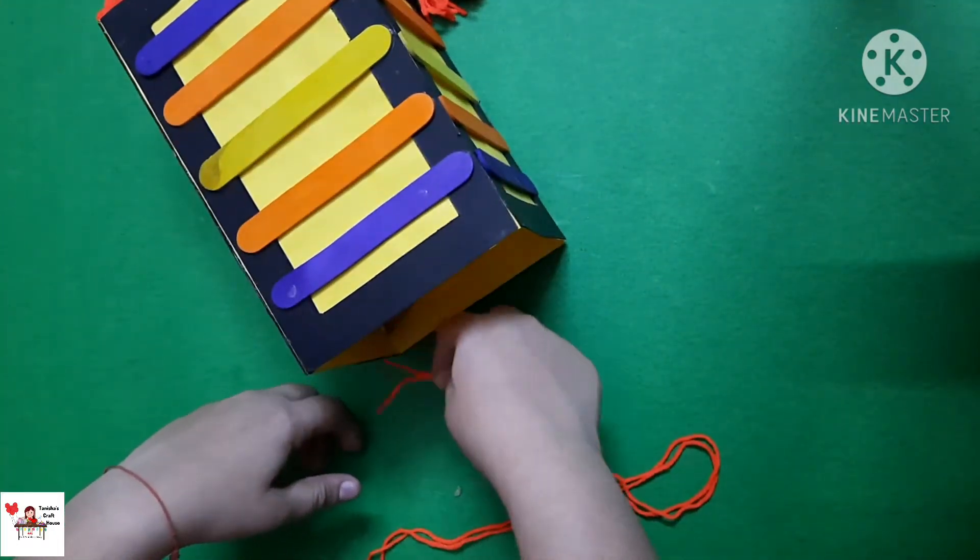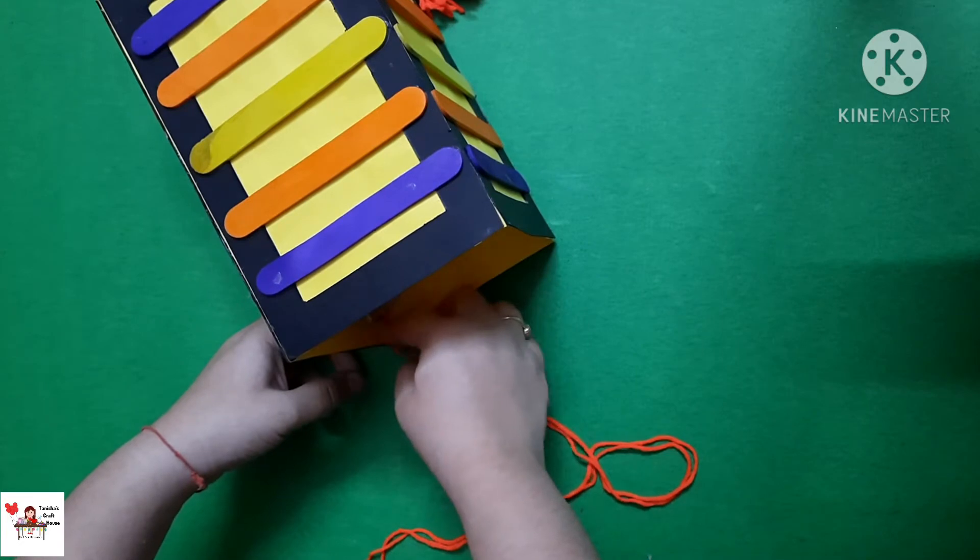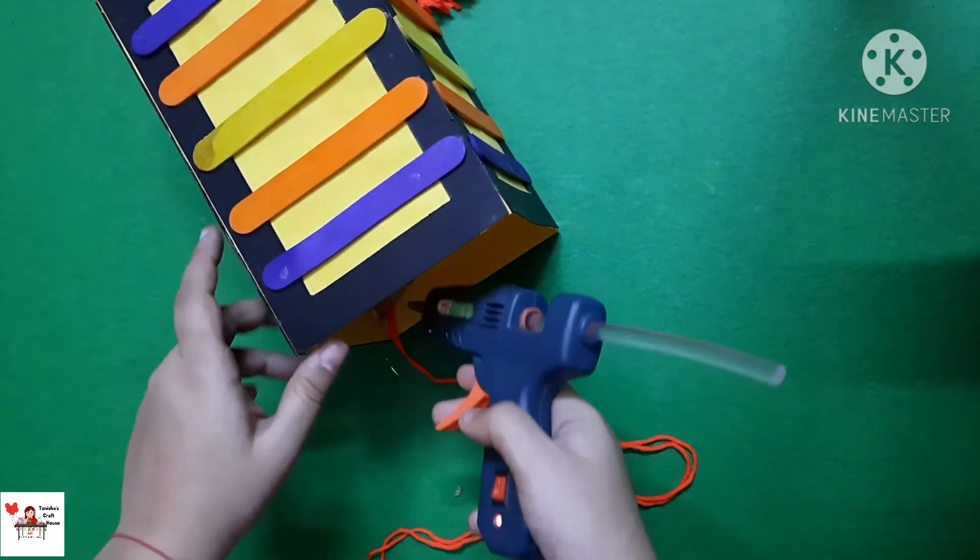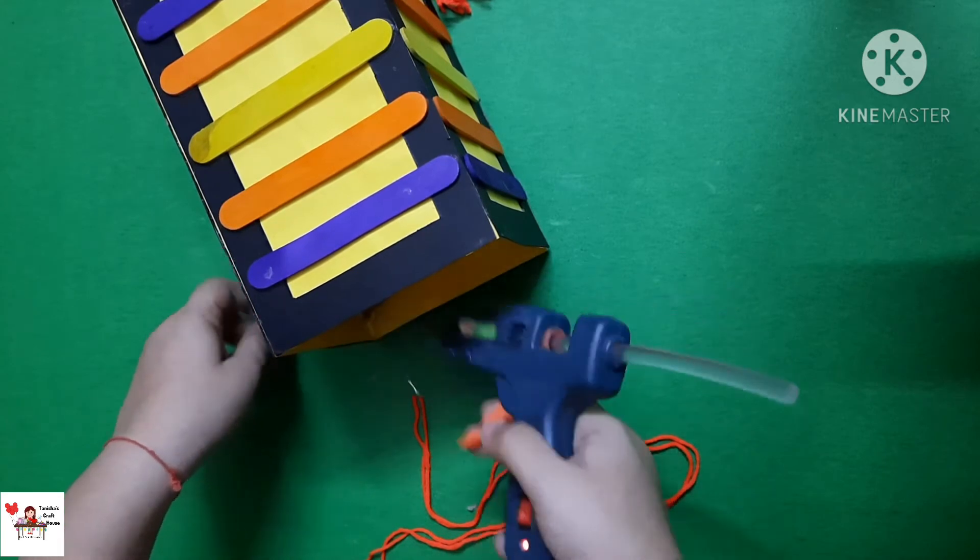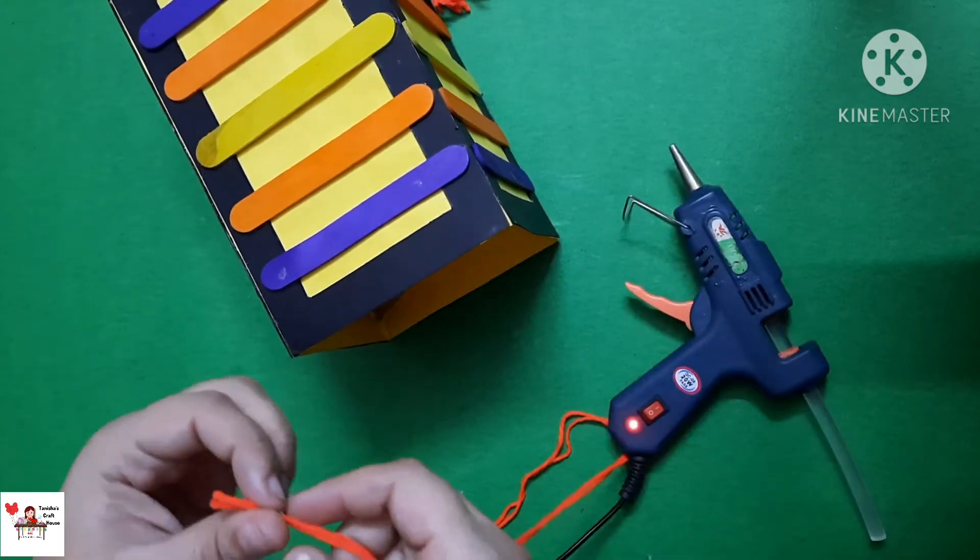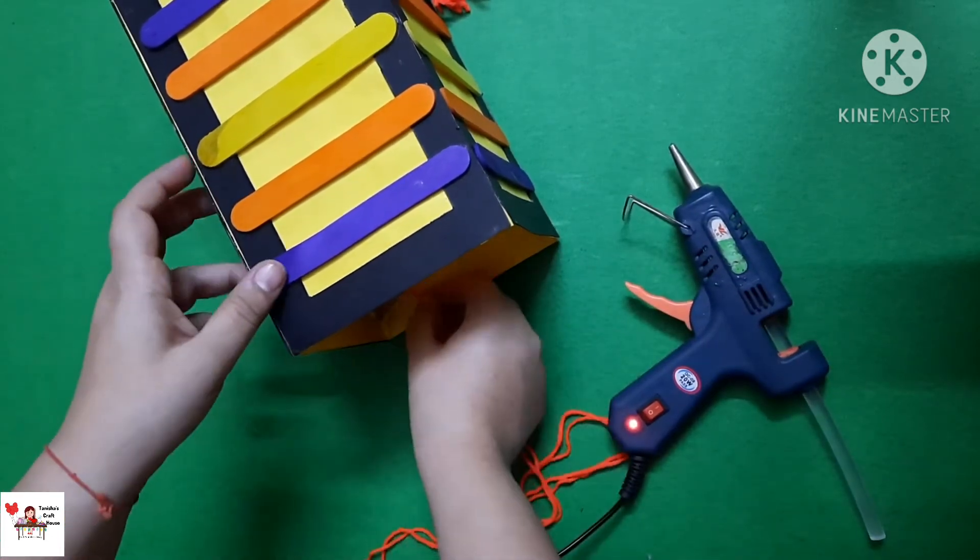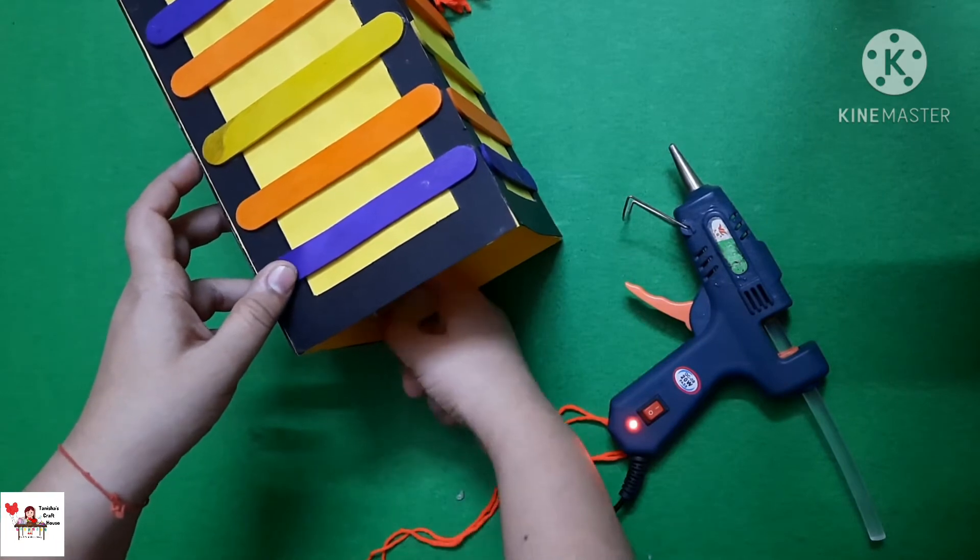So this is how it looks. Next, I am going to take wool and just take a double thread of the wool and stick it like this on the other side as well. Now we are going to stick on all the 4 sides and then join them and make our hanging.